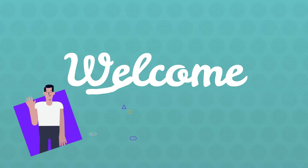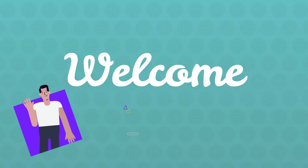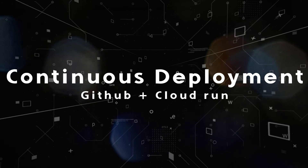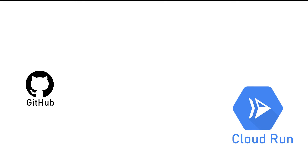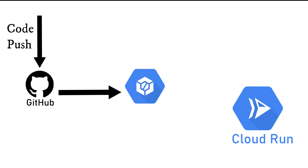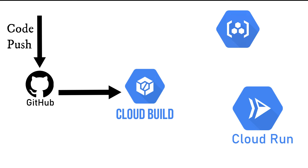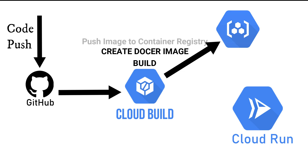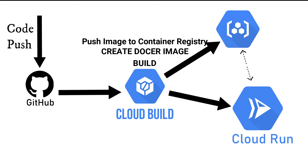Welcome back. In this video we're going to see continuous deployment into Cloud Run with GitHub. Whenever we make a push into GitHub, it's going to get deployed into Cloud Run. GitHub is our code repository, it will trigger Cloud Build, which will build and create the Docker image and push it to Cloud Container Registry, and that gets deployed into Cloud Run.